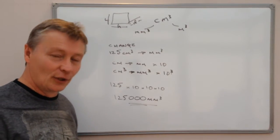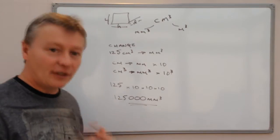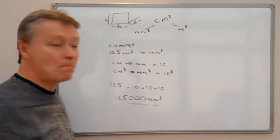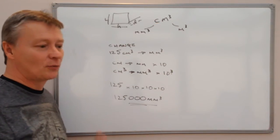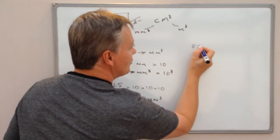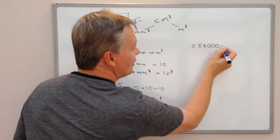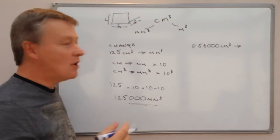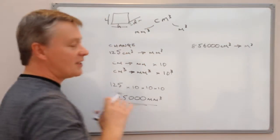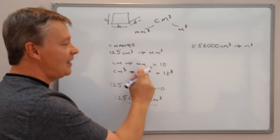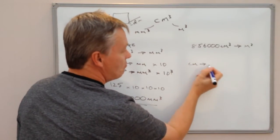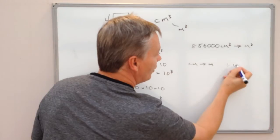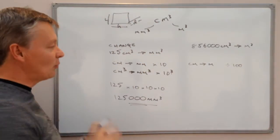I hope that's okay — you might want to stop the video and have a look at that. Now pressing on to the second part: converting from centimeters cubed to meters cubed. A typical question would be something like 856,000 centimeters cubed converted to meters cubed. For a linear measurement, centimeters to meters, you would simply divide by 100.